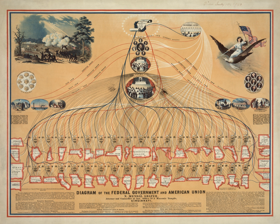Congress has the power to remove the president, federal judges, and other federal officers from office. The House of Representatives and Senate have separate roles in this process. The House must first vote to impeach the official. Then a trial is held in the Senate to decide whether the official should be removed from office. Although two presidents have been impeached by the House of Representatives — Andrew Johnson and Bill Clinton — neither of them was removed following trial in the Senate.